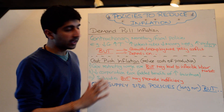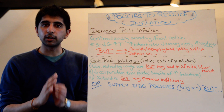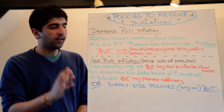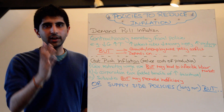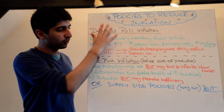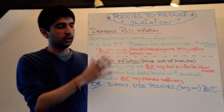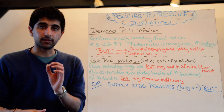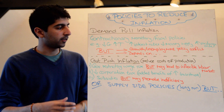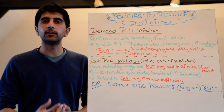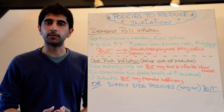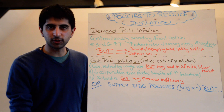So that's how the government could reduce inflation. The main evaluation point is that it depends on what type of inflation is occurring — that's important to know, as it determines which policies should be targeted and used.